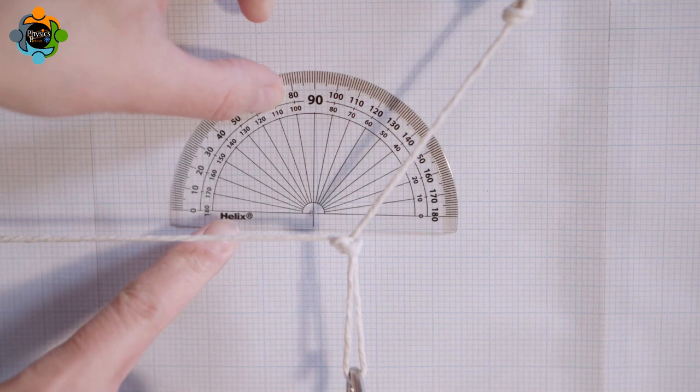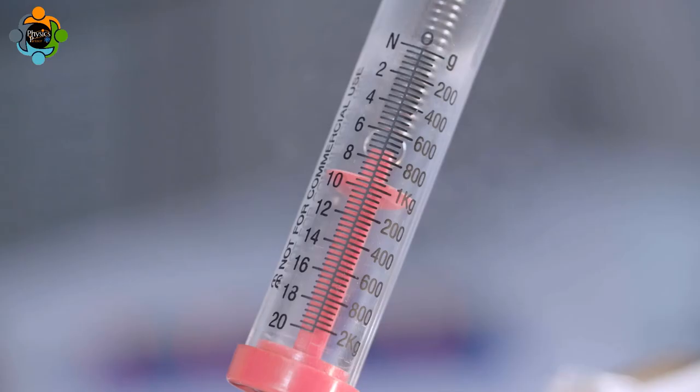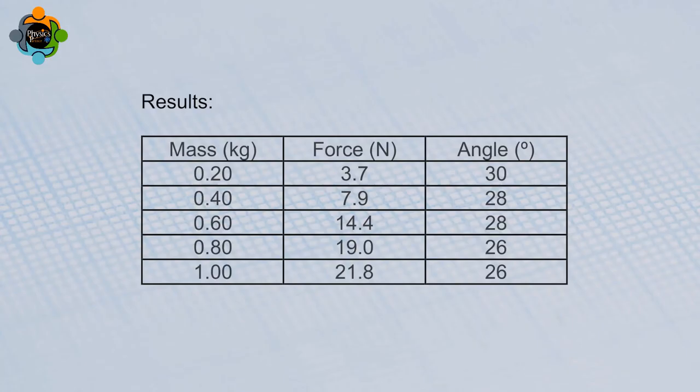For each new value of mass on the hanger, measurements of the angle and force are taken. These values, as well as the value of the mass, are written in the table.